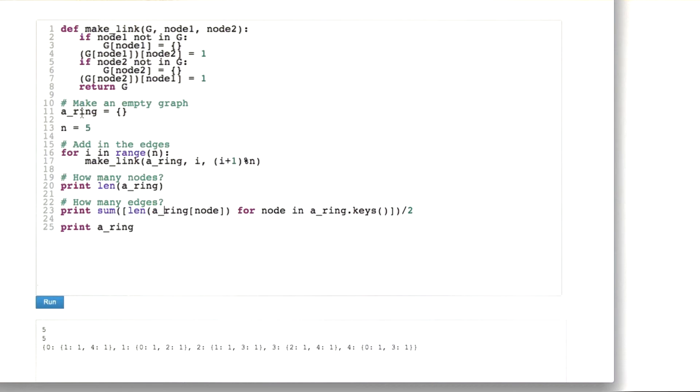Then what we're going to do is to this empty graph, we're going to start adding in edges. And the particular edges we're going to add in, we're going to loop for each number from 0 to n-1. We're going to make a link in the ring from node i to node i plus 1 mod n. That's going to get us the wrap around at the very end.